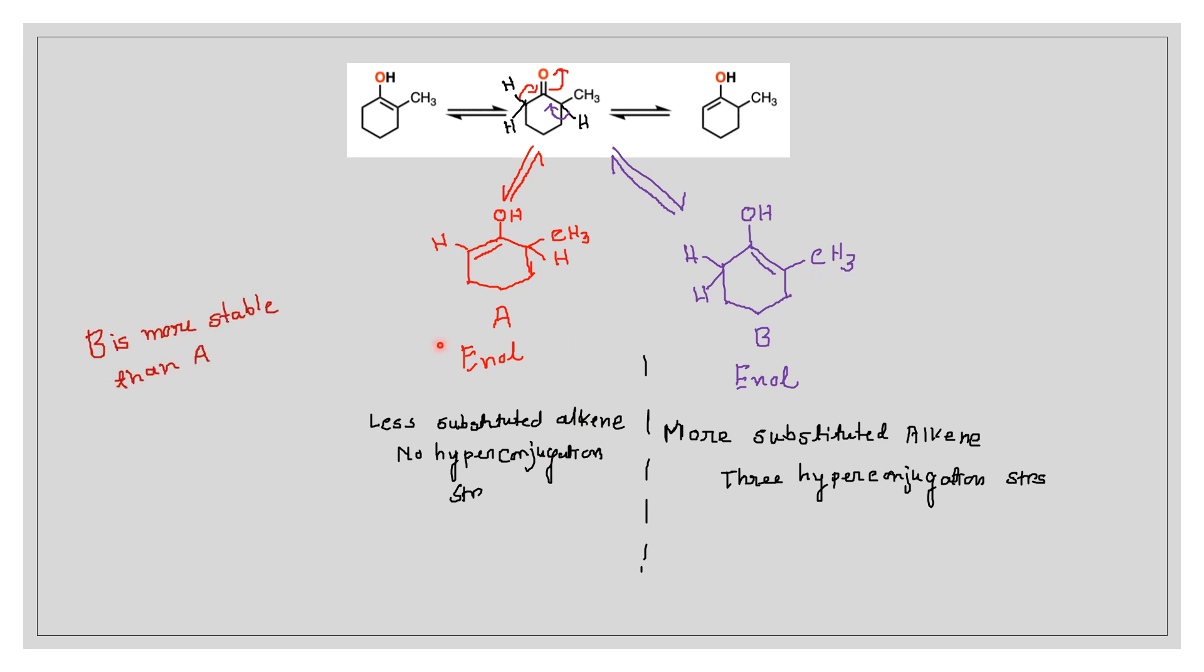We know that more hyperconjugation structures mean more stability. That means compound B is more stable than compound A.